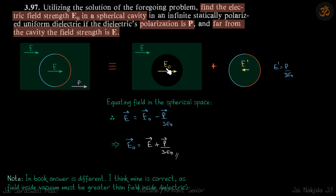What we needed to find is the field inside the cavity. Now in the book the answer has a minus sign here, but I think this solution is correct because the field in the vacuum must be greater than the field in the adjacent dielectric. So there ought to be a plus sign here. That's all.